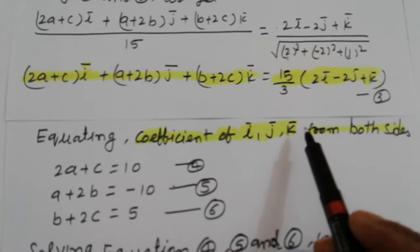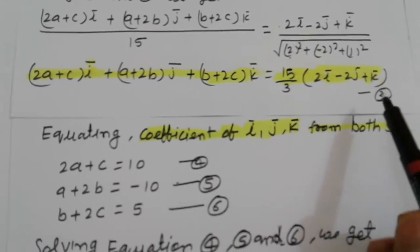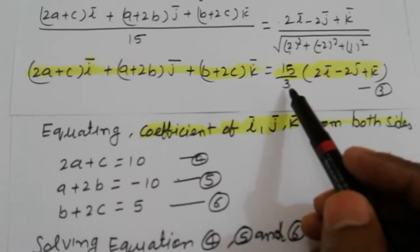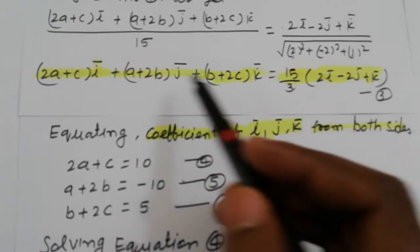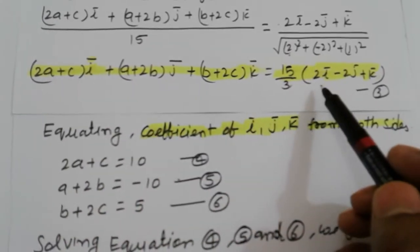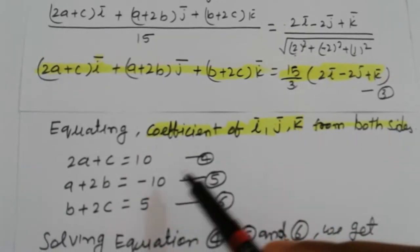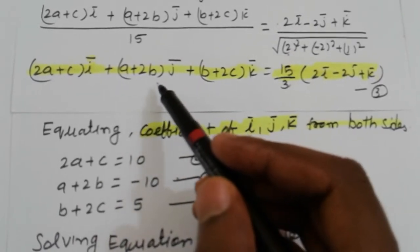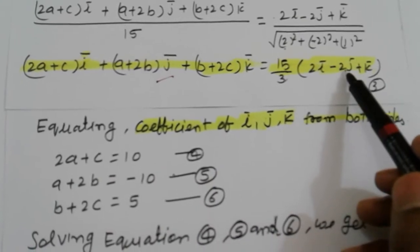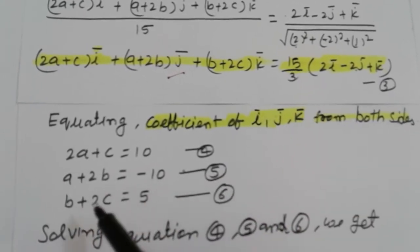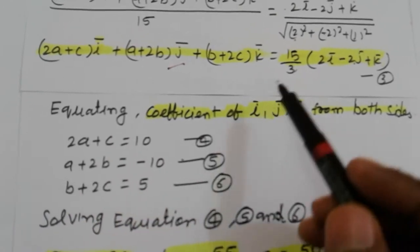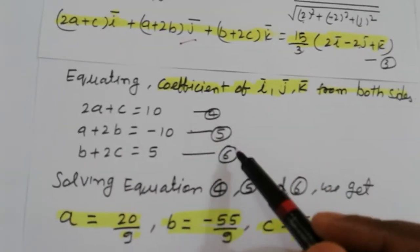Equating the coefficient of i, j, k from both sides. i coefficient: 2a + c equals 10. j coefficient: a + 2b equals -10. k coefficient: b + 2c equals 5. These are equations 4, 5, 6.